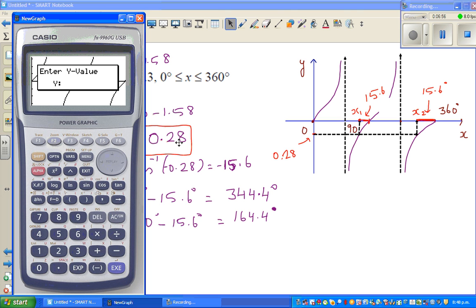If you go G-Solve, you want to find x, so x-calc. The y value is negative 0.28. So the first answer is 164.35, which is rounding up, this is 164.4. And the other answer is 344.4 degrees.